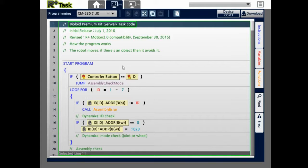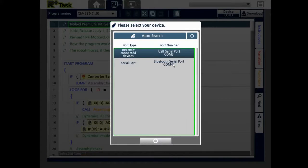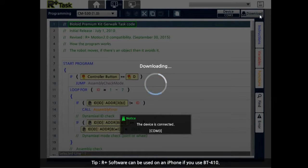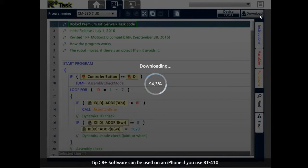And here's the GerWalk example code that we have already made for you. So what we want to do is make sure that you select the correct COM port, which mine is COM port 3. I press OK. And let's download the code.